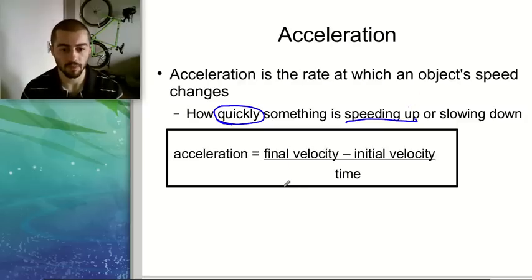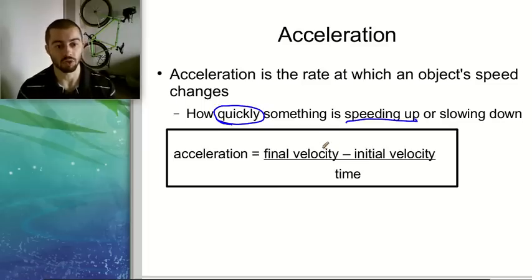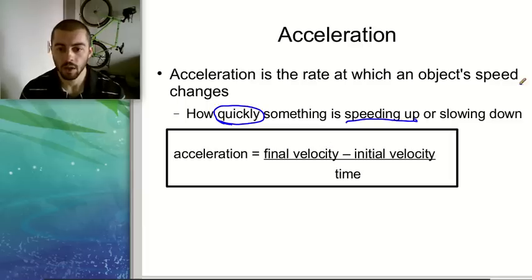So the formula for acceleration is acceleration equals final velocity minus initial velocity over time. So the velocity part of this is important because our velocity tells us the direction as well. So if we start going 5 miles an hour and then turn around and go 5 miles an hour the other way, we're actually going to have some acceleration there because we changed direction as well. So acceleration, we can use this formula to practice an example here.